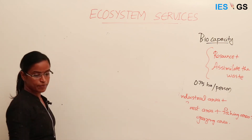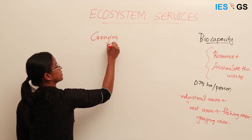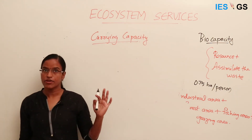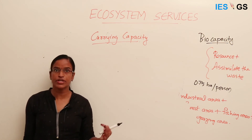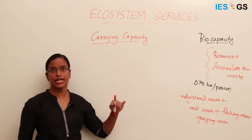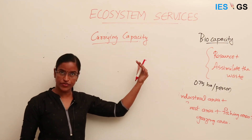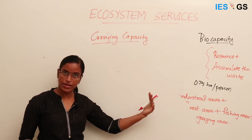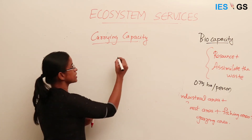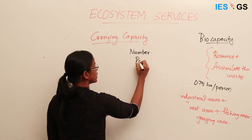Another related term is carrying capacity. Carrying capacity denotes the number of individuals that the earth can support in a particular area. It can be the number of humans or any other species in a particular area. This also indicates the capacity of the earth to supply resources and to assimilate waste. It is denoted as a maximum number — the population it can support.